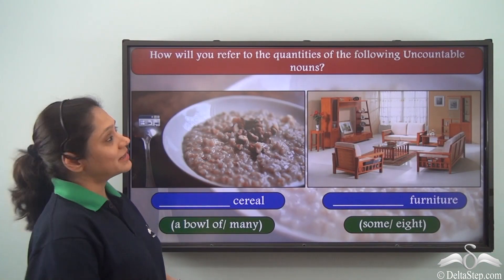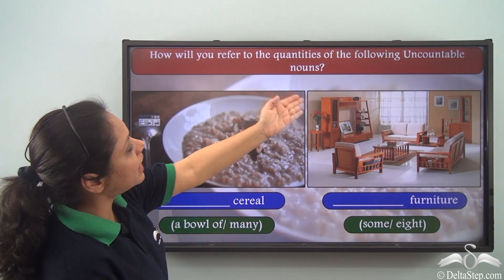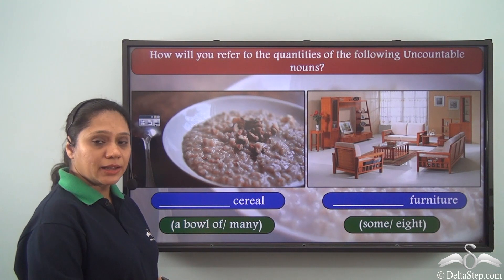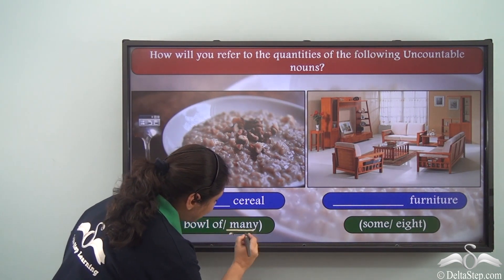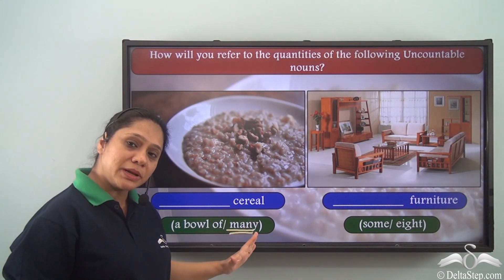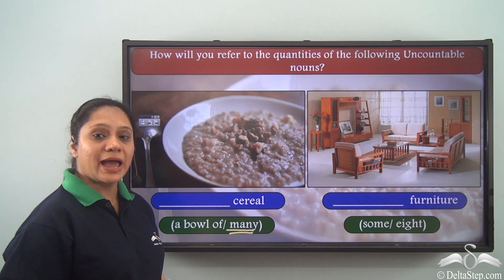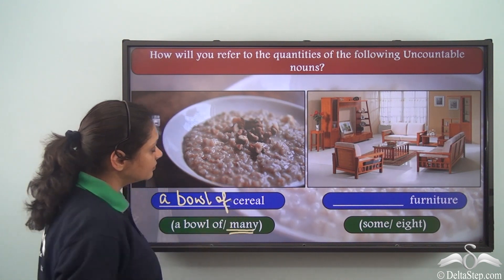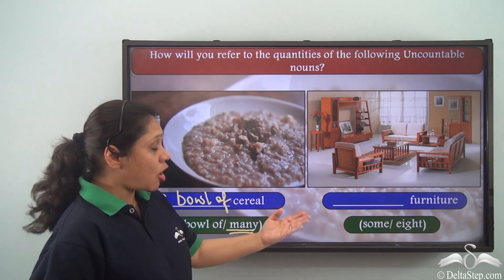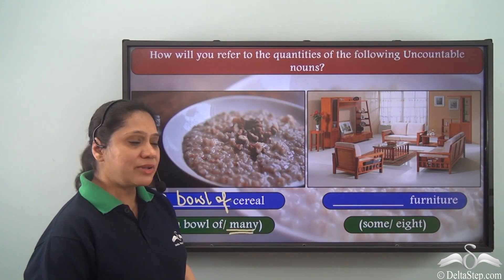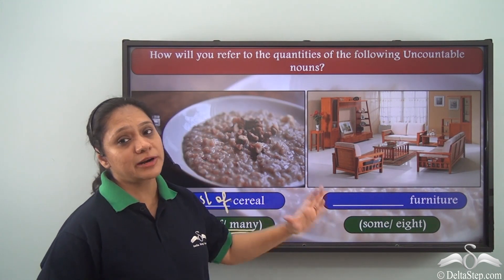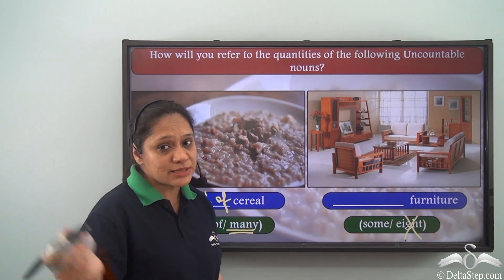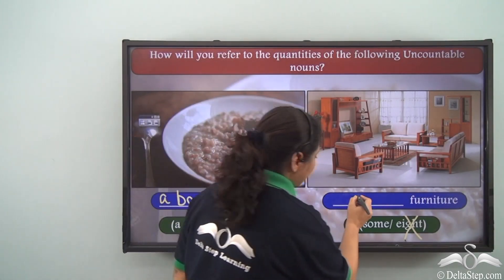Now, how will you refer to the quantities of the following uncountable nouns? For 'cereal,' the options are 'a bowl of' or 'many.' We cannot use 'many' with an uncountable noun — we use 'many' with countable nouns. So the correct answer is 'a bowl of cereal.' For 'furniture,' the options are 'some' or 'eight.' Furniture is an uncountable noun, so we cannot say 'eight furniture,' though we could say 'eight pieces of furniture.' The correct answer is 'some furniture.'